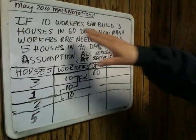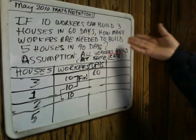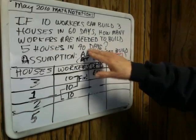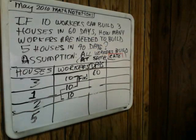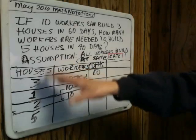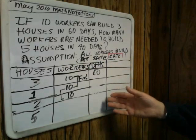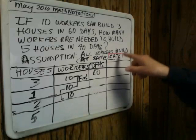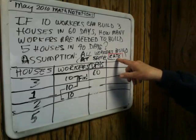So we have 10 workers, 3 houses, 60 days, and of course we're asking a standard question here. If you change the number of houses and the number of days, how many workers will be needed? What makes this problem more challenging is that unlike a simple proportion where you have 2 quantities changing, here you have 3 quantities changing. I set up a table which I find extremely useful for developing an intuitive grasp of ratio and proportion, particularly when you have 3 quantities.